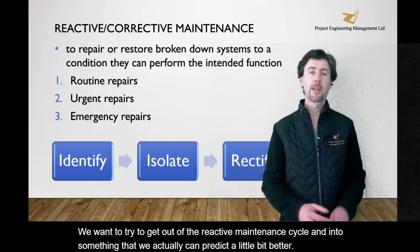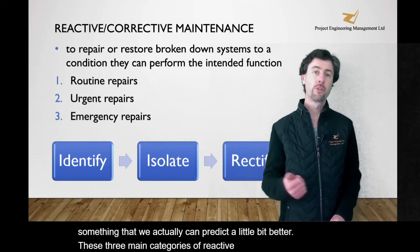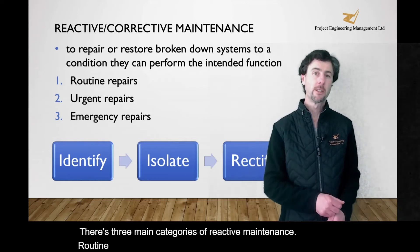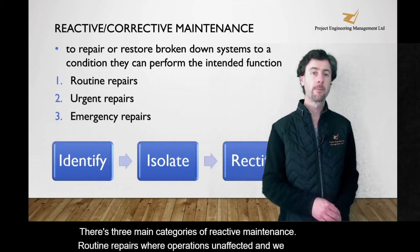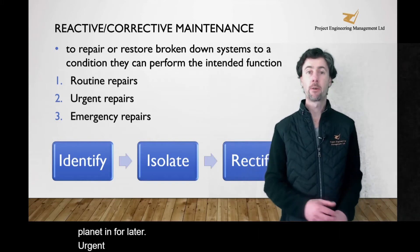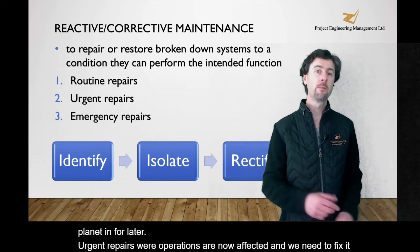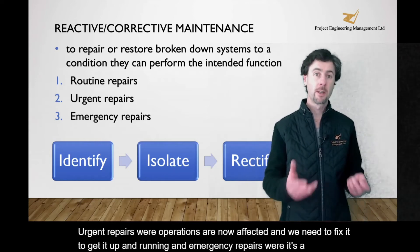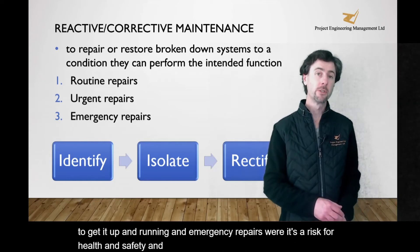There are three main categories of reactive maintenance. Routine repairs, where operations aren't affected and we can maybe plan it in for later. Urgent repairs, where operations are now affected and we need to fix it to get it up and running. And emergency repairs, where it's a risk for health and safety and we need to urgently do something about it.